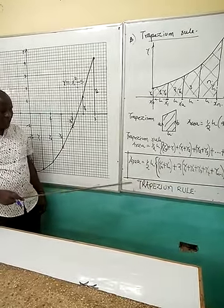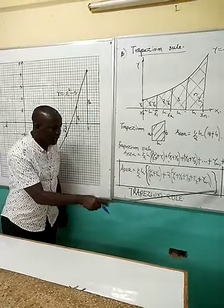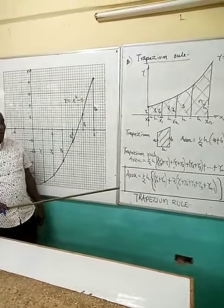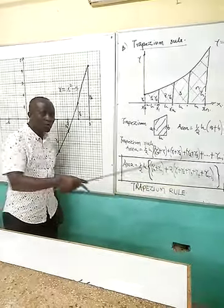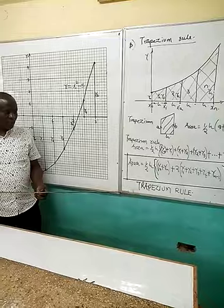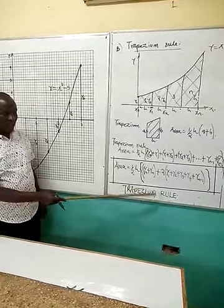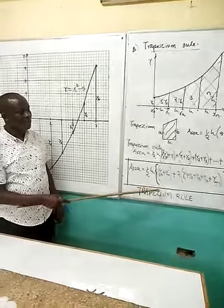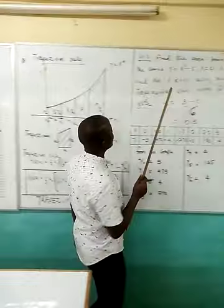Then the bigger bracket occurring between half h and the last yn minus 1. And this is what I call my trapezoidal rule or what I simply call the trapezium rule. Now for us to understand this rule better and simplify it further, I want us to consider an example.